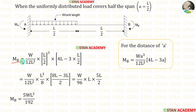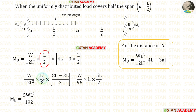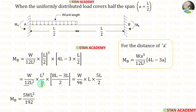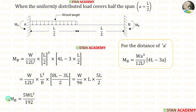Now let us find MB by substituting L/2 for A in the MB formula. (L/2)³ gives L³/8; we can eliminate L² and L³. Taking LCM, we multiply 4L by 2 to get 8L; then 12×8 = 96. Then 8L minus 3L gives 5L, and L×L gives L². Then 96×2 = 192. Finally the formula for MB is 5WL²/192.